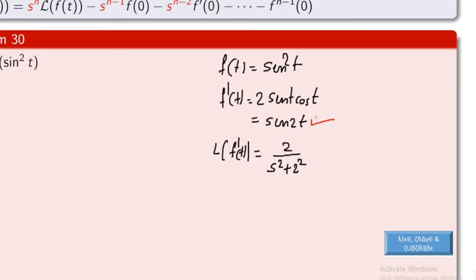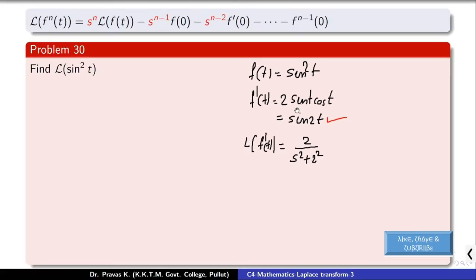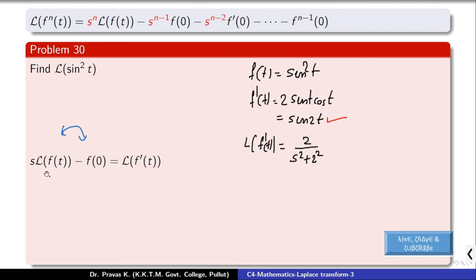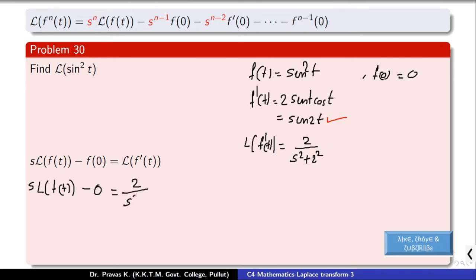Using the formula L{f'(t)} = s · L{f(t)} − f(0), and rearranging to find L{f(t)}: since f(t) = sin²(t), we have f(0) = 0. Substituting, s · L{f(t)} − 0 = L{f'(t)} = 2 / (s² + 4). Therefore, L{sin²(t)} = 2 / [s(s² + 4)].